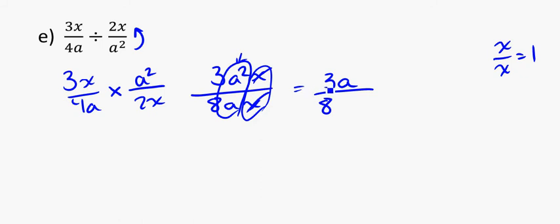So my final answer would be 3 times a all over 8, because the a squared over a simplified to a, and the x over the x cancel each other out.